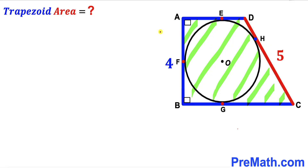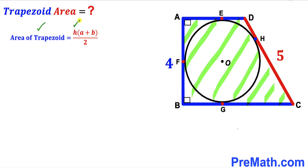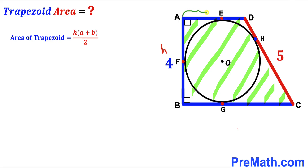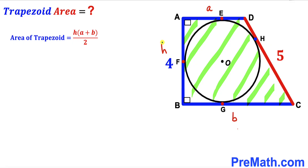Let's focus on trapezoid ABCD. To calculate its area, recall the trapezoid area formula: Area = height h × (base a + base b) / 2. In our case, AB is the height, which I'll label lowercase h. I'll label side AD as base a and side BC as base b. We know the height h is 4, but a and b are unknown.